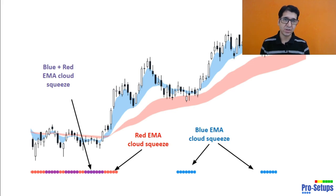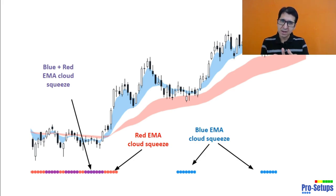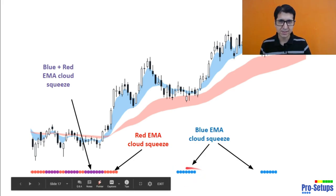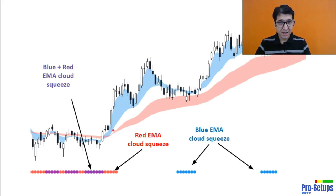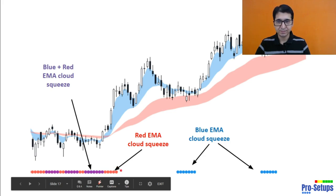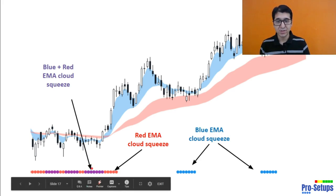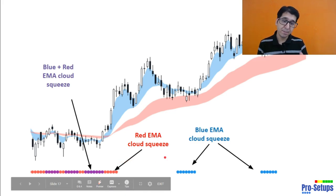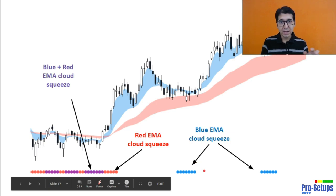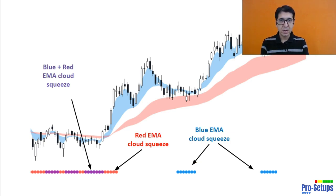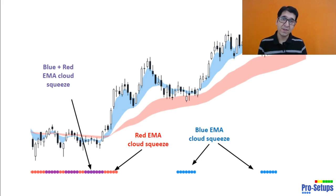For this we have dots at the bottom of the chart. The blue dots represent the compression of the blue EMA cloud — when the blue EMA cloud compresses so much that it squeezes and appears very thin, the blue dots appear at the bottom of the chart. When the red EMA cloud compresses and appears very thin, the red dot appears. When both blue and red EMA clouds compress, we get purple dots. Our main point of consideration will be the blue dots — here we look at the trend of the stock, chart patterns, ATR, key moving averages like 50 or 200 day moving averages, and other factors.